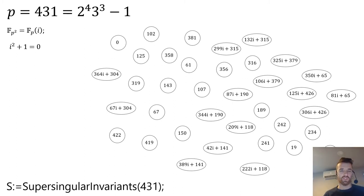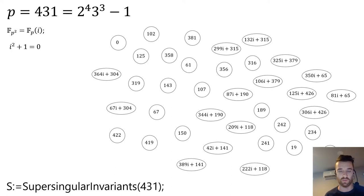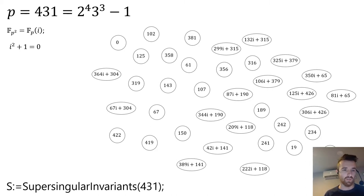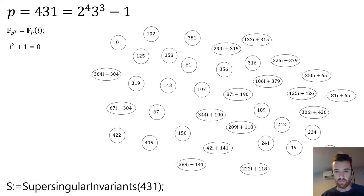To set up this toy example used in the tutorial, I chose the prime 431, which is the same shape as all of the real-world SIDH and CSIDH primes: it's 2^4 × 3^3 − 1. I built the extension field F_{p²}, and then asked Magma, using the supersingular invariants function — which only takes the prime as input — to output the set of j-invariants corresponding to all of the nodes in the supersingular isogeny graph.